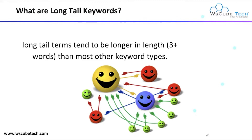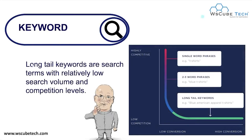Long tail keywords tend to be longer in length — that is three or more words. Compared to other keyword types, long tail keywords have a length greater than three words, and they are meaningful and very specific — more specific keywords.